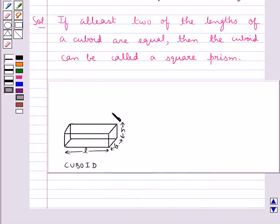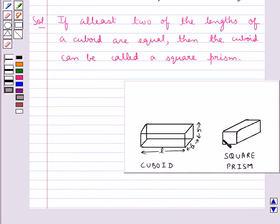So in this cuboid, if we take any two lengths to be equal, like suppose we take the length L and the height H to be equal, then it will form a square prism. As you can see in the figure, this is a square prism which is formed by taking two of the lengths of the cuboid equal.